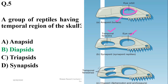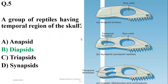If there are two temporal fenestrae — upper and lower temporal openings — such a group is known as diapsids and includes triconodonts and extinct archosaurs. The correct option is beta.